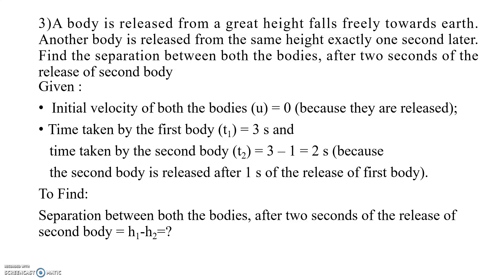Third problem: a body is released from a great height and falls freely towards earth. Another body is released from the same height exactly one second later. Find the separation between both bodies after two seconds of the release of the second body. Initial velocity u = 0 for both bodies since they are released from rest. Assume time taken by the first body t₁ = 3 seconds.